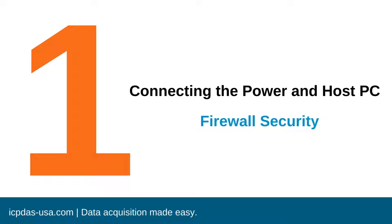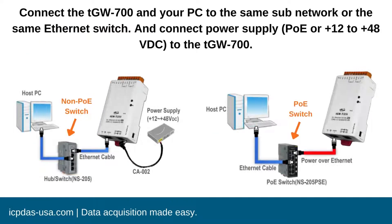Make sure the network of your PC is functioning appropriately, and your Windows and antivirus firewall is accurately set up. Connect the TGW-700 and your PC to the same subnetwork or the same Ethernet switch, and connect a power supply to the TGW-700.